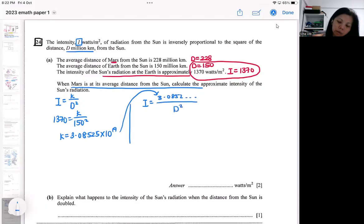And then put in the d for Mars. And then you can bunch calculator. So this part is actually quite easy if you don't mix it up.